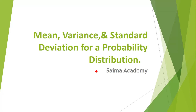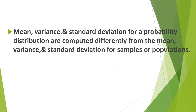This is the second lesson on mean, variance, and standard deviation for a probability distribution. In the first lesson we learned how to calculate the mean. In this lesson we will learn how to calculate the variance and standard deviation for a probability distribution. We have learned mean, variance, and standard deviation for samples and populations, but now we will calculate these for a probability distribution.